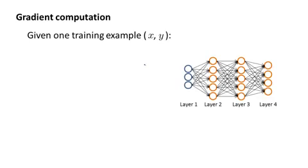Let's start by talking about the case of when we have only one training example. So imagine that our entire training set comprises only one training example, which is a pair x, y. And let's step through the sequence of calculations we would do with this one training example.